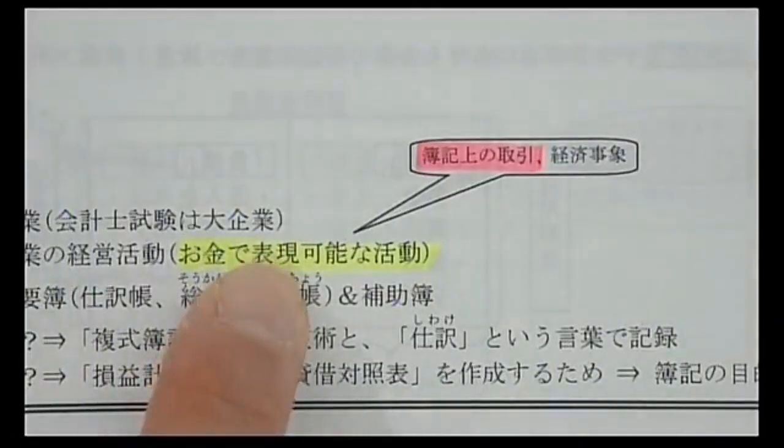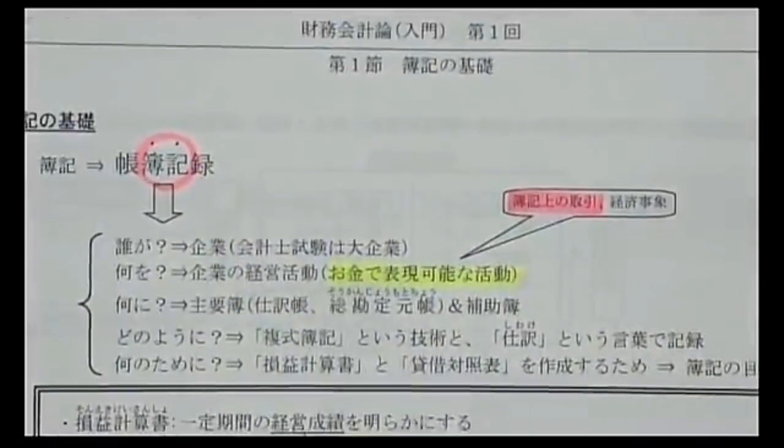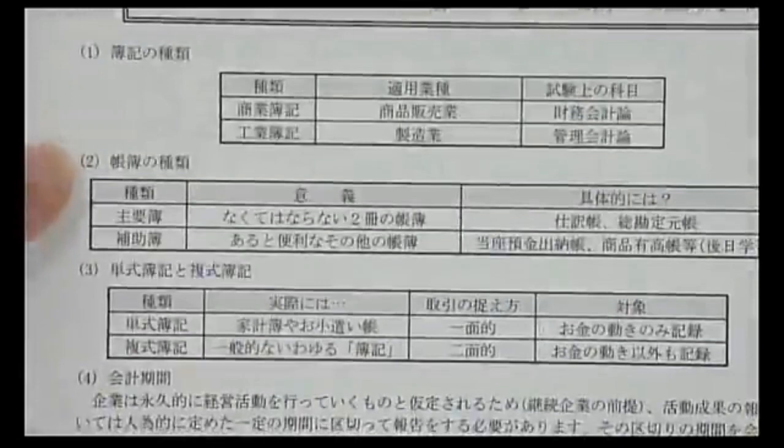例えばパートの面接は企業活動の一環ですが、お金が動かないので簿記の記録の対象にはなりません。一方、100万円の商品を販売した場合はお金が動くので記録の対象になります。帳簿には種類があり、主要簿と補助簿に分けられます。